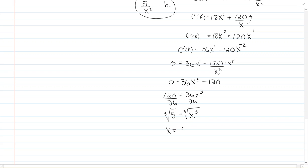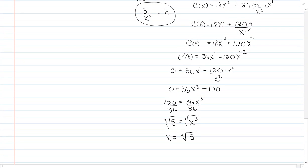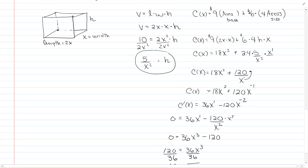So x equals the cube root of 120 over 36. Going back to my problem, x was the width, so the width is cube root of 5 over 3. The length is 2 times the cube root of 5 over 3. The height you get from the formula: h equals 5 divided by the cube root of 5 over 3 squared.